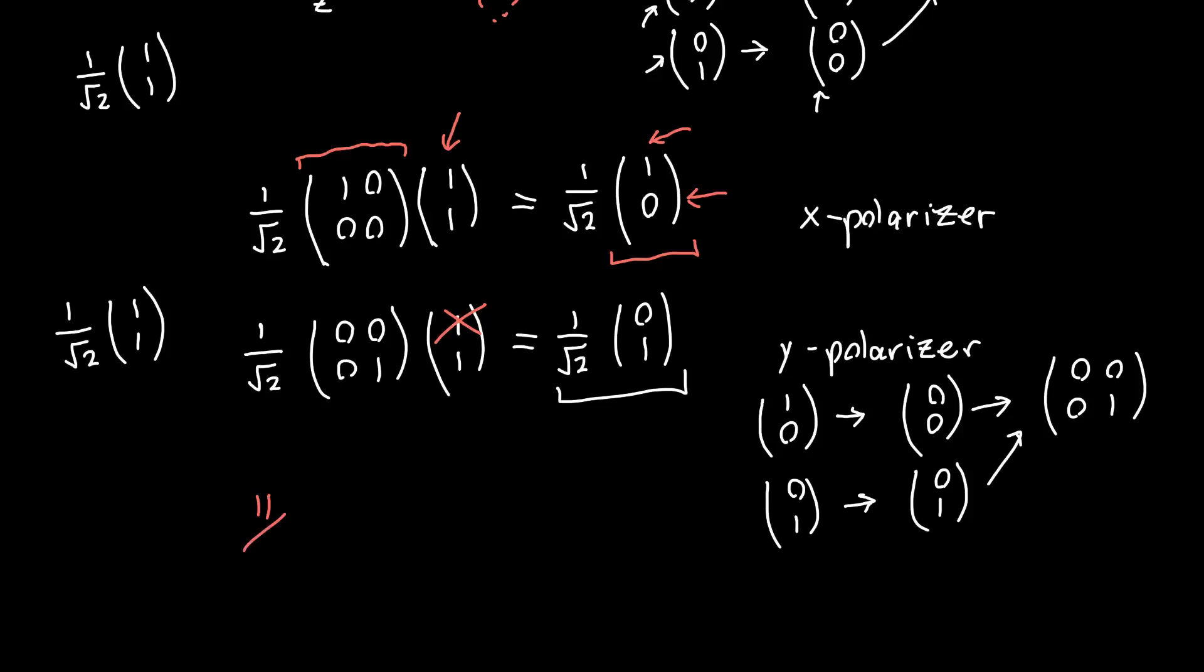You might be saying, Jordan, that's great, but this is super simple math. Why are you making it complicated with matrices? All I have to do is look at this thing and set it to zero. That's true - polarizers are really simple to deal with when they're just oriented in x and y. But sometimes, often actually, they're oriented at an angle, maybe at a 20 degree angle for example.